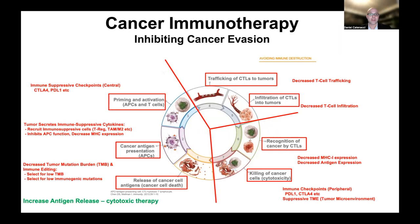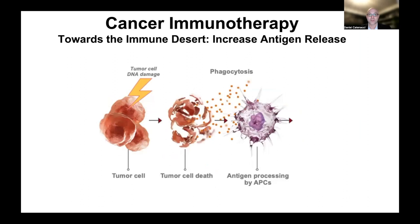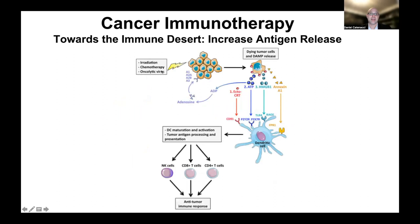How can we increase antigen release? We can give cytotoxic therapy. Although chemotherapy and radiation therapy directly inhibit cancer cells, as a positive consequence, cancer cells release more antigens and DAMPs — damage-associated molecular patterns — that filter to antigen presenting cells like dendritic cells, jumpstarting T cell training in the lymph node. So radiation, chemotherapy, and anything that causes cancer cell kill can increase antigen release and jumpstart the presentation of antigens to recruit, select, activate, and proliferate an adaptive immune response to the tumor.